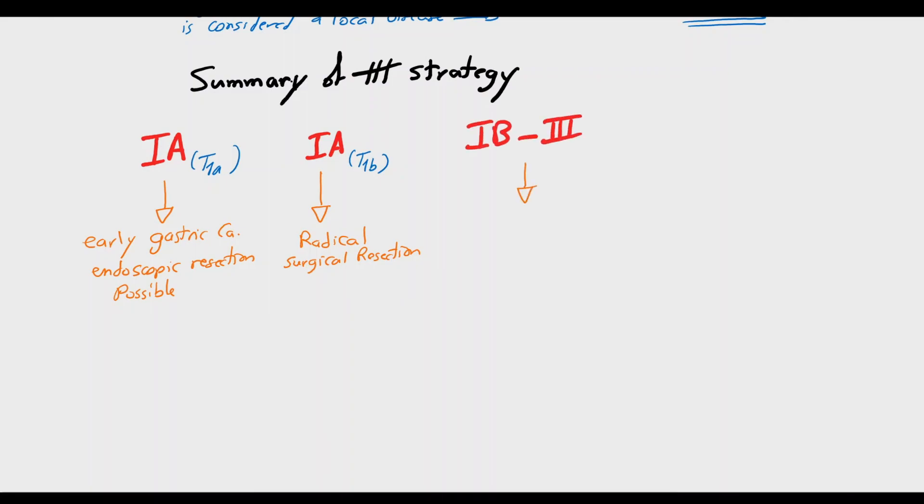Stage 1B to 3, neoadjuvant chemotherapy and downstaging is recommended, then radical surgical resection, then adjuvant chemotherapy.